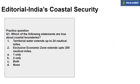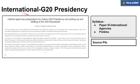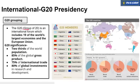A prelims practice question on this topic has been provided — please attempt it and submit in the comment section. This topic is important from Paper 3, international agencies point of view. Let's look at the G20 grouping. G20 means a group of 20 nations — actually 19 countries plus the European Union, which is itself a group of nations. The G20 countries are mostly economically rich nations with a higher share of international trade. Two-thirds of the world's population lives in these countries, they produce 85% of world GDP, account for 75% of international trade, and 80% of global investment.